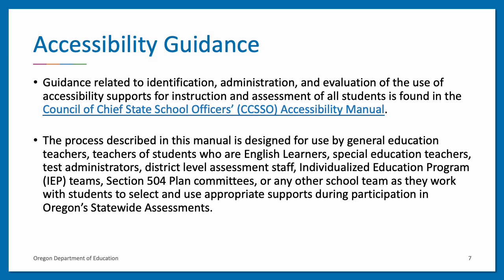Having familiarized your student teams with the requirements associated with the use of the three tiers of accessibility supports, we turn our attention to some of the practical tasks involved in the process: the identification or selection, administration, and evaluation of accessibility supports. For those purposes, we recommend that teams consult the Council of Chief State School Officers Accessibility Manual, specifically Section 3, the Five-Step Decision-Making Process, and the Tools section.